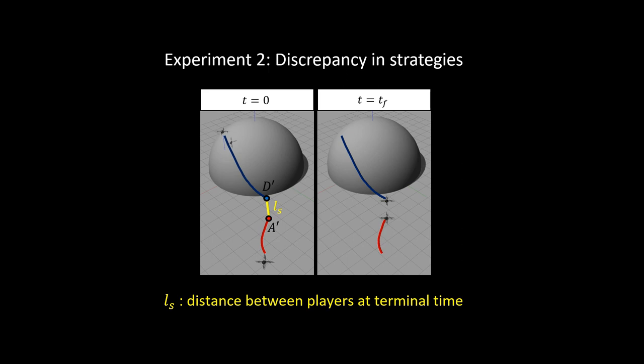As for the second experiment, discrepancy between strategies are considered. We propose a metric LS as a distance between players at terminal time.